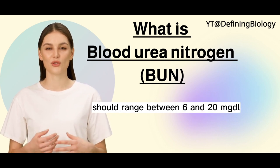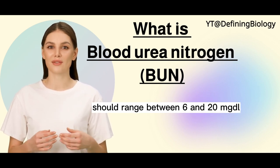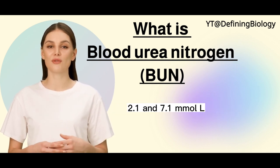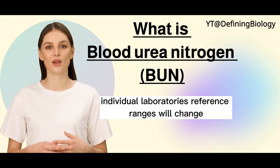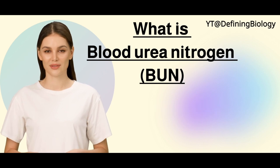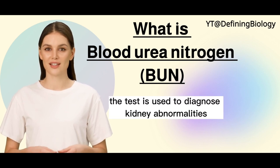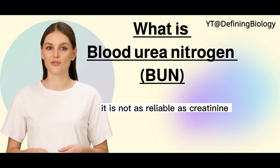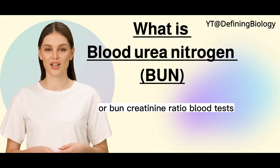Urea nitrogen levels in normal human adult blood should range between 6 and 20 mg/dL (2.1 and 7.1 mmol/L). Individual laboratory reference ranges will vary since the test employed varies. The test is used to diagnose kidney abnormalities, though it is not as reliable as creatinine or the BUN-to-creatinine ratio blood tests.